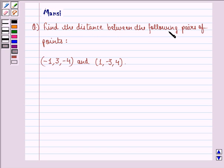find the distance between the following pairs of points: (-1, 3, -4) and (1, -3, 4).